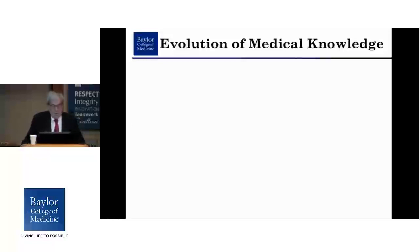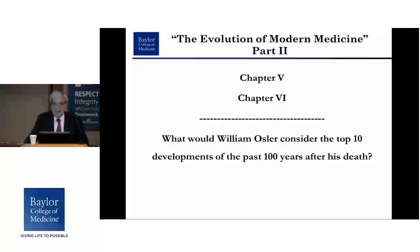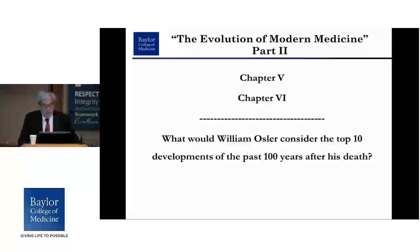So we've quickly reviewed early antiquity, Greece and Rome, and got to the Renaissance — about 3,000 years of history in a short period of time. Next time in part two, we'll cover chapters five and six, which cover the last 300 years. So we're doing 3,000 years of history in one hour, and 300 years of history in one hour. Next week we will also talk about what Osler would consider the top 10 developments of the past 100 years after his death if he were alive. Thank you.